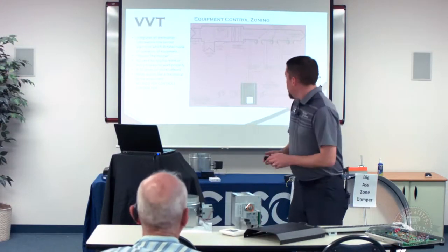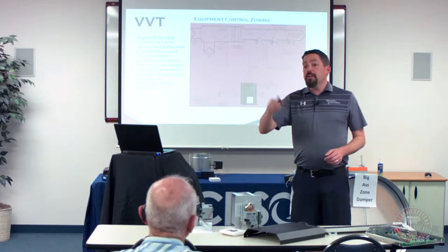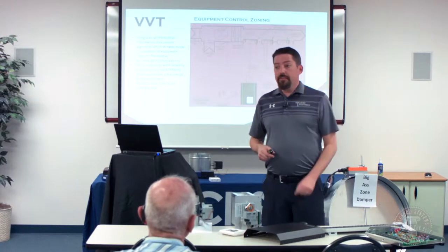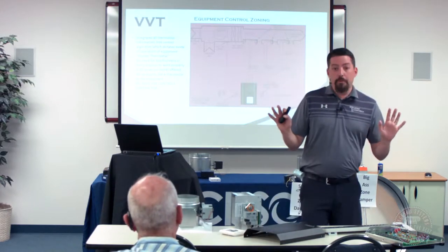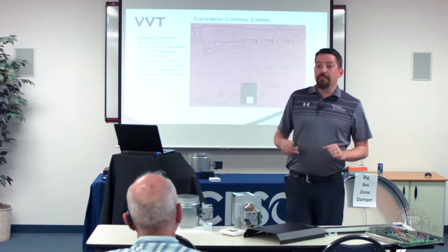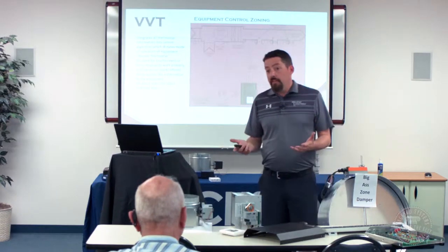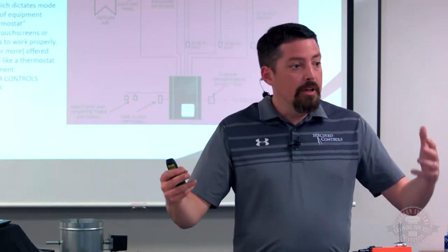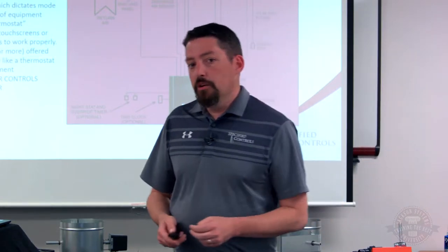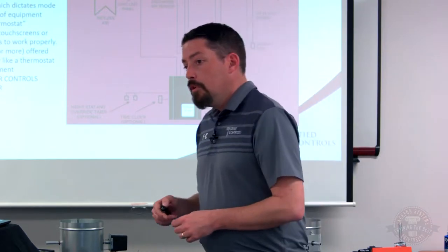Don't worry about transformer sizing. Whether you have 20 zones or fewer, a 75 VA transformer will almost always cover everything. We size at about 5 VA per zone damper — 2 VA for the damper actuator and 2 VA for the thermostat. You'll almost never need to go larger than 75 VA on the transformer.